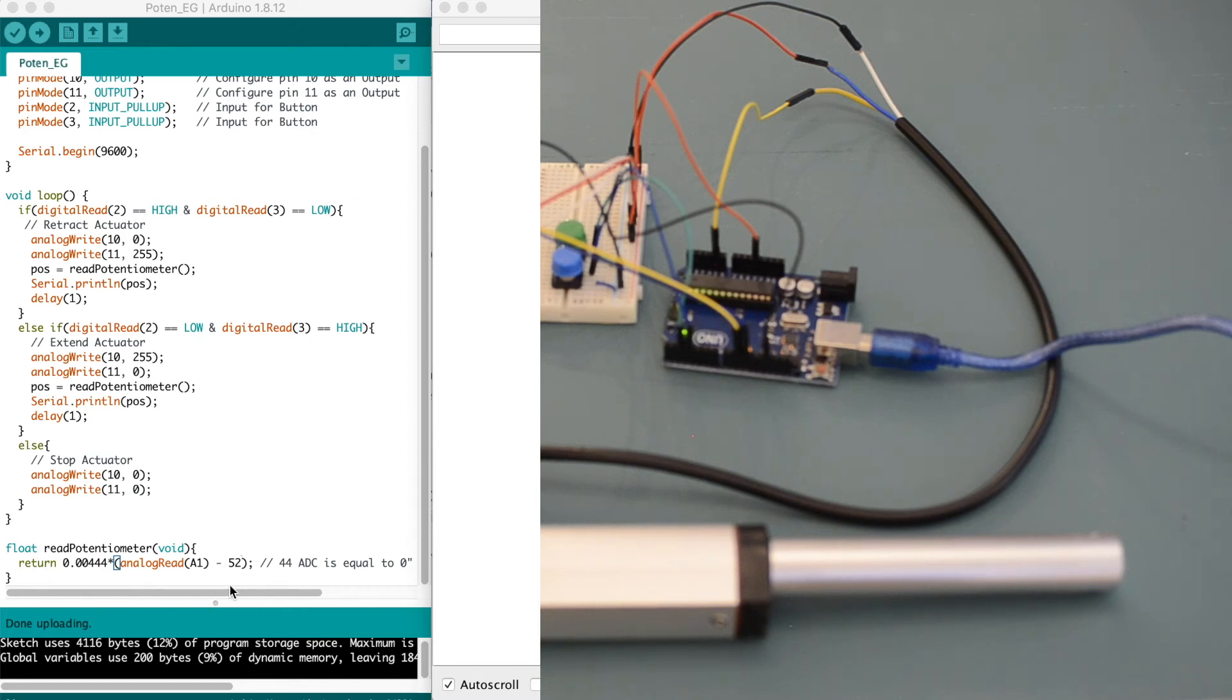You can see the 52 to balance it out to zero, and I have this value by just using the range, which was 952 to 52, and my stroke length, which was 4 inches to 0 inches, and came up with this value here.